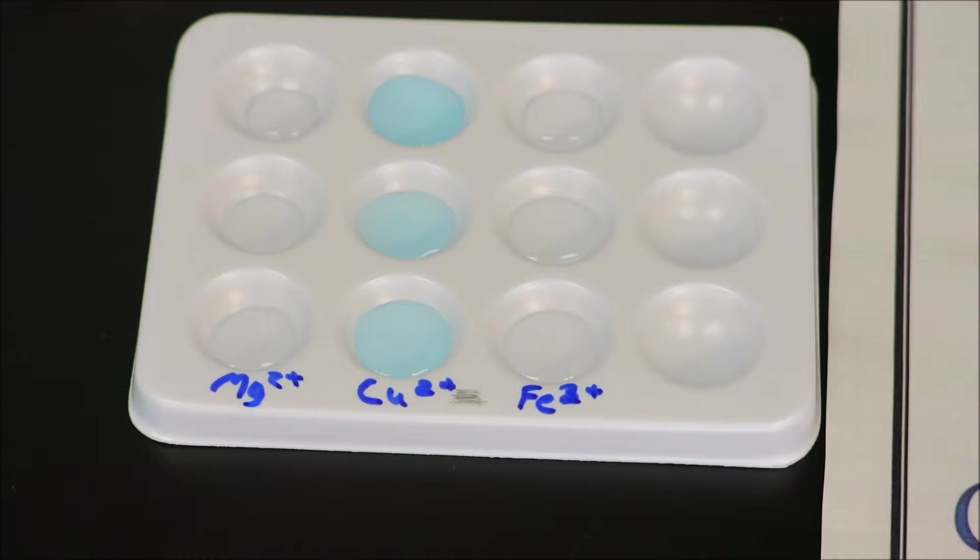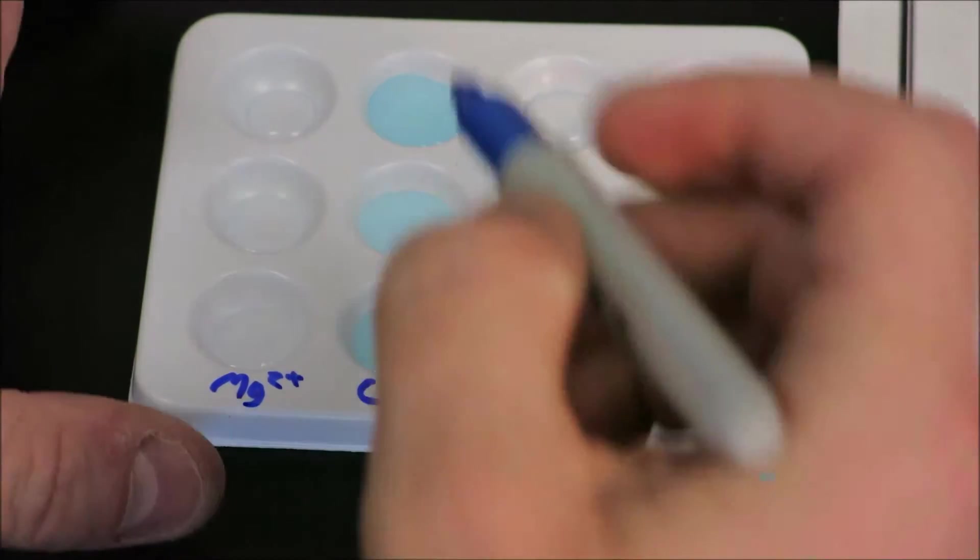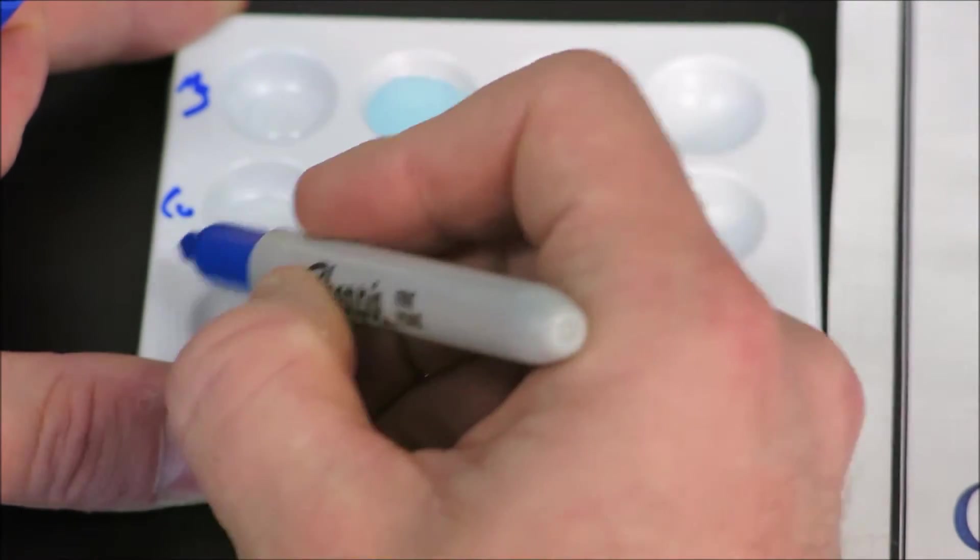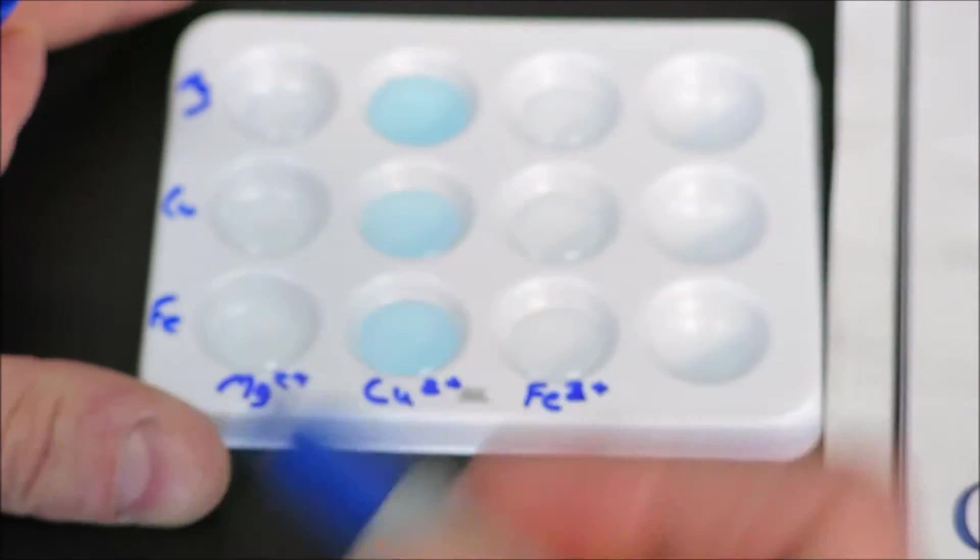Now that we have all of the ions ready to go, we are going to add our solids. And in this case, we're going to add our solids across the rows. So our first row, we are going to be testing magnesium solid. Our second row, we'll be testing copper solid. And our third row, we'll be testing iron solid.